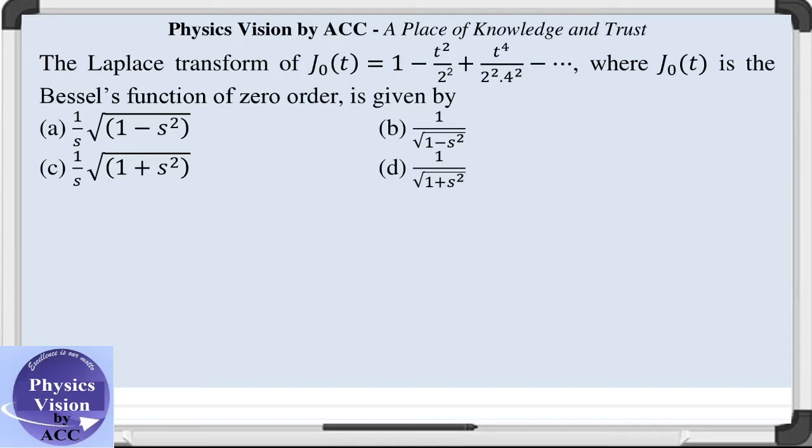Welcome back dear students to the physics vision classes. The given question is we need to calculate the Laplace transform of Bessel function J₀(t), where J₀ is the Bessel function of zero order. We need to calculate its Laplace transform. So let us start the solution.